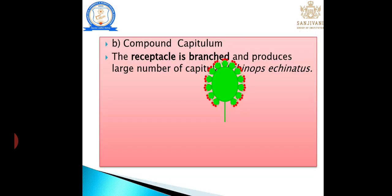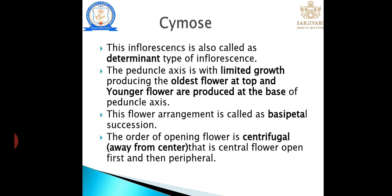Compound capitulum: the receptacle or disc has a branched structure that produces secondary capitula. For example: Echinops. Next type is cymose inflorescence, also called determinate inflorescence, having limited growth, with basipetal succession — older flower at the top and younger flower at the base — and centrifugal succession. In racemose: unlimited growth, acropetal succession, centripetal succession. In cymose: limited growth, basipetal succession, centrifugal succession.